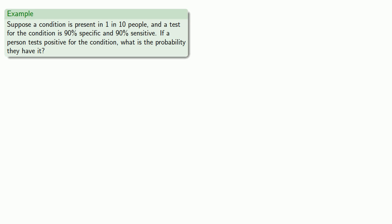With these ideas in mind, suppose a condition is present in 1 in 10 people, and a test for the condition is 90% specific and 90% sensitive. If a person tests positive for the condition, what is the probability they have it? Common sense says that since this test is 90% specific and 90% sensitive, it must be very accurate, so the person almost certainly has the condition. But if you want a correct answer, we'll have to do some mathematics — let's use the frequentist interpretation and see how often this event occurs.